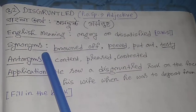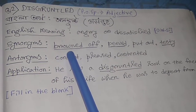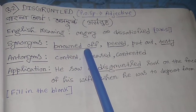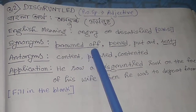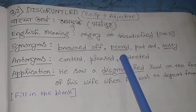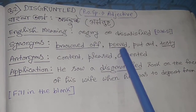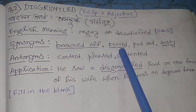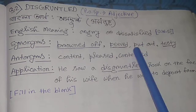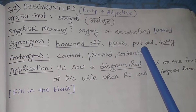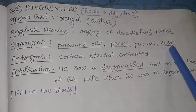Synonyms of disgruntled include: peeved (P-E-E-V-E-D) — also useful as a phrasal verb — put out, and testy (T-E-S-T-Y). Please note the spellings carefully.